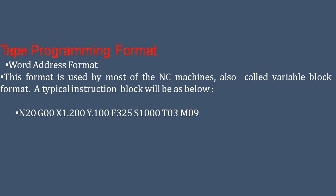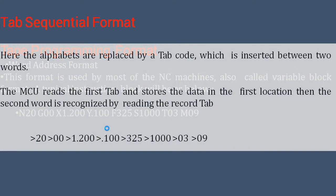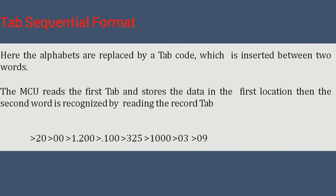The tape programming format — word address format — is used by most numerical control machines, also called variable block format. A typical instruction block includes X-Y coordinates, feed, speed, tool, and machine number. In the tab sequence format, alphabetic addresses are replaced by a tab code inserted between words. The MCU reads the first tab and stores the data in the first location, then the second word is recognized by reading the second tab.